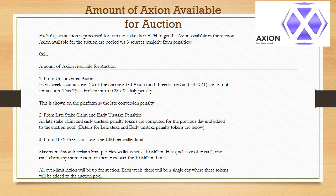Amount of Axion available for auction: each day, an auction is processed for users to stake their ETH to get the Axion available in the auction. Axion available for auction is pooled via three sources. 1) From unconverted Axion: every week a cumulative 2% of the unconverted Axion — both free claimed and Hex2T — is set out for auction. This 2% is broken into a 0.2857% daily penalty, shown on the platform as the late conversion penalty. 2) From late stake claim and early unstake penalties: all late stake claim and early unstake penalty tokens are computed for the previous day and added to the auction pool.